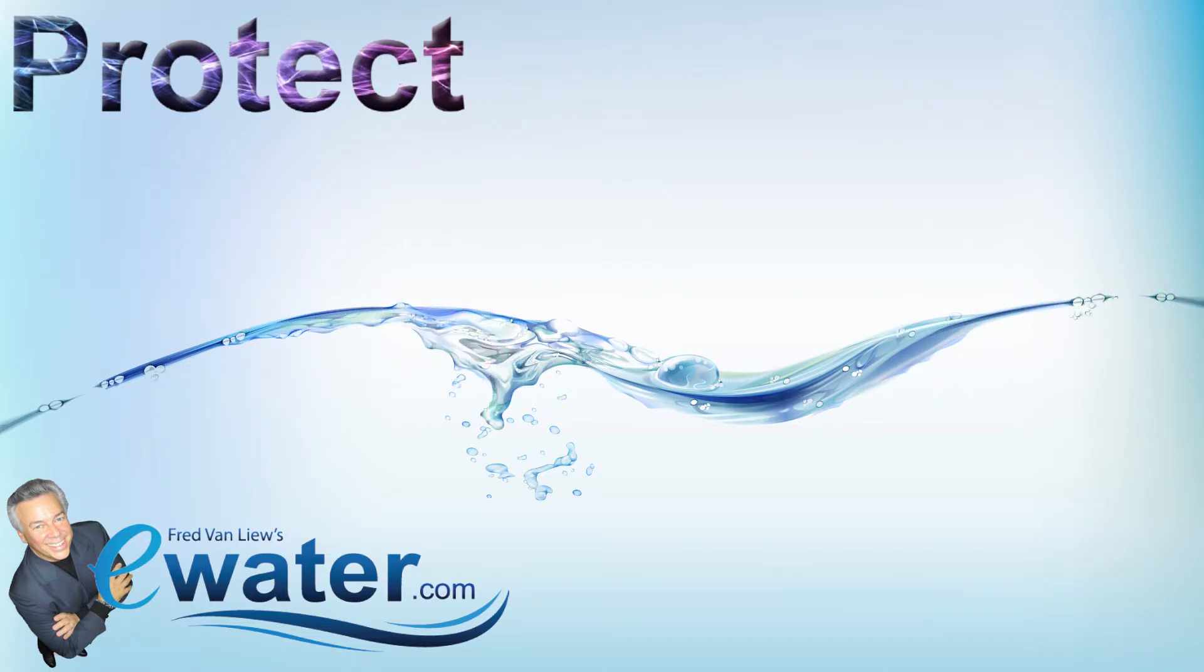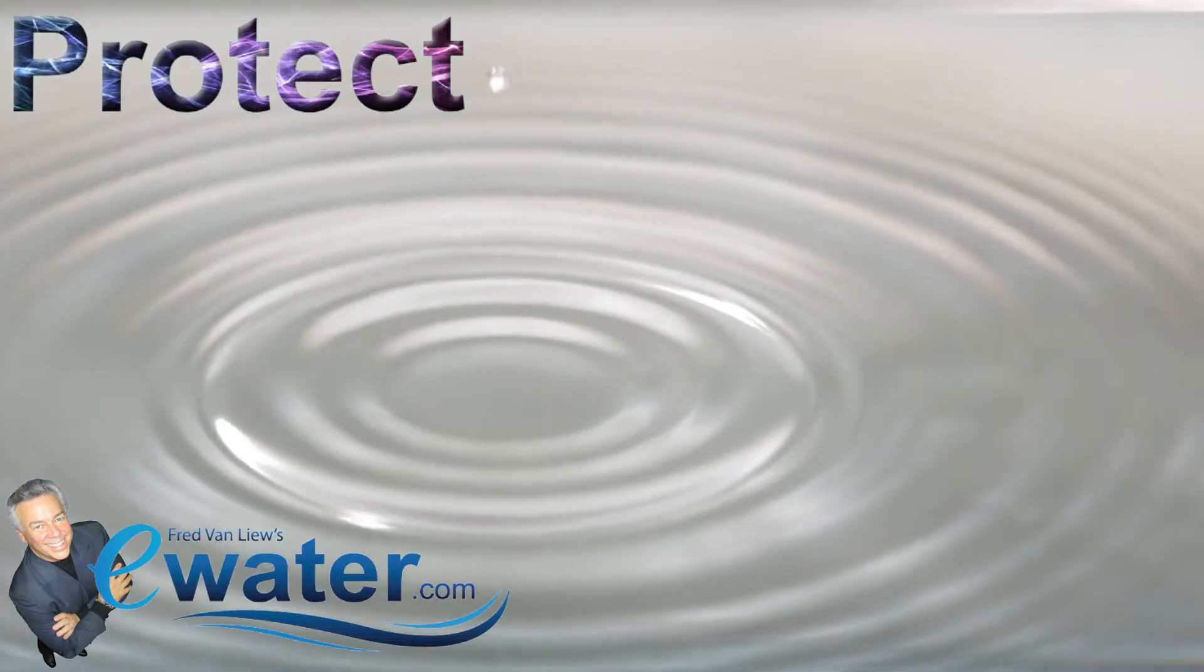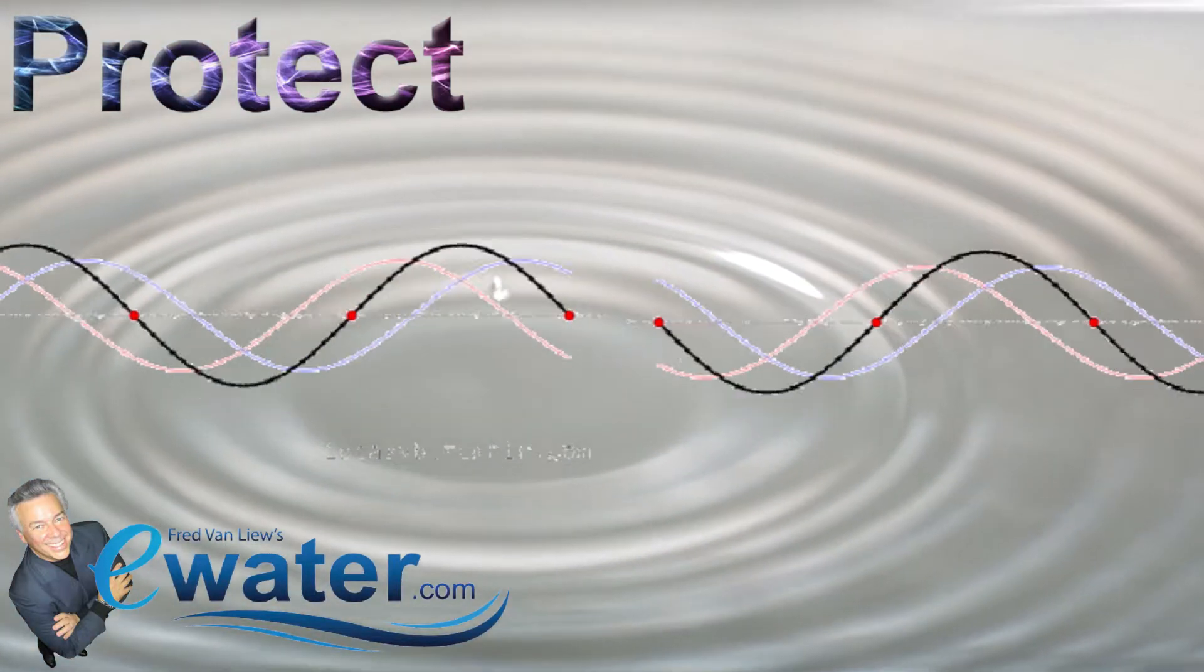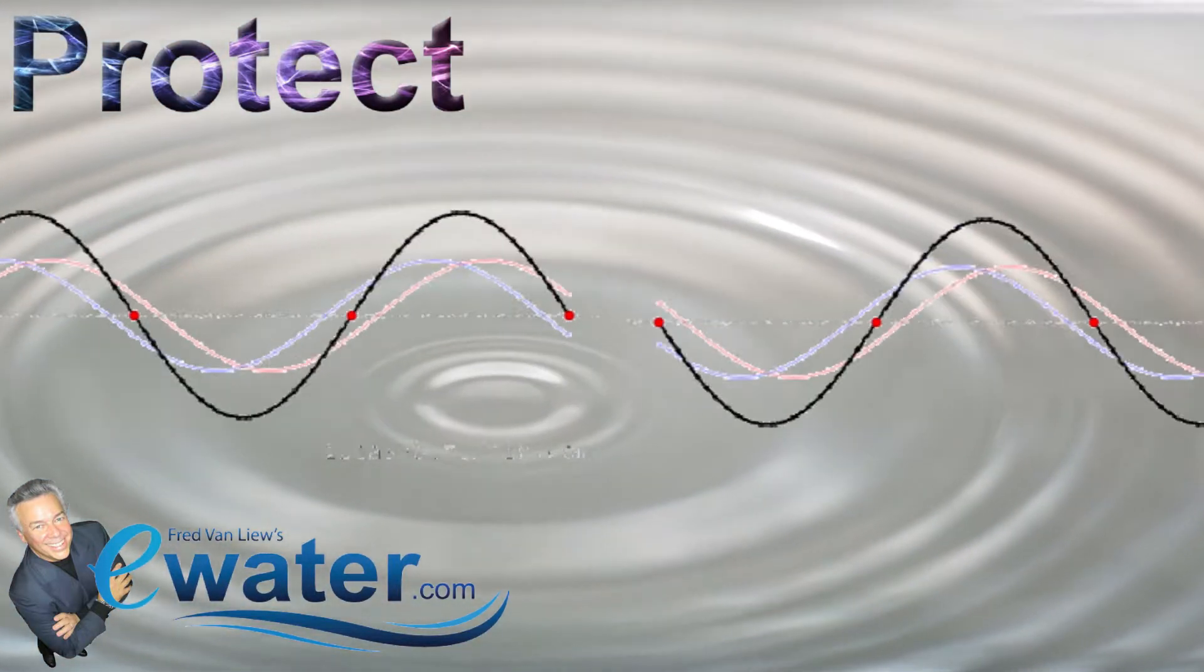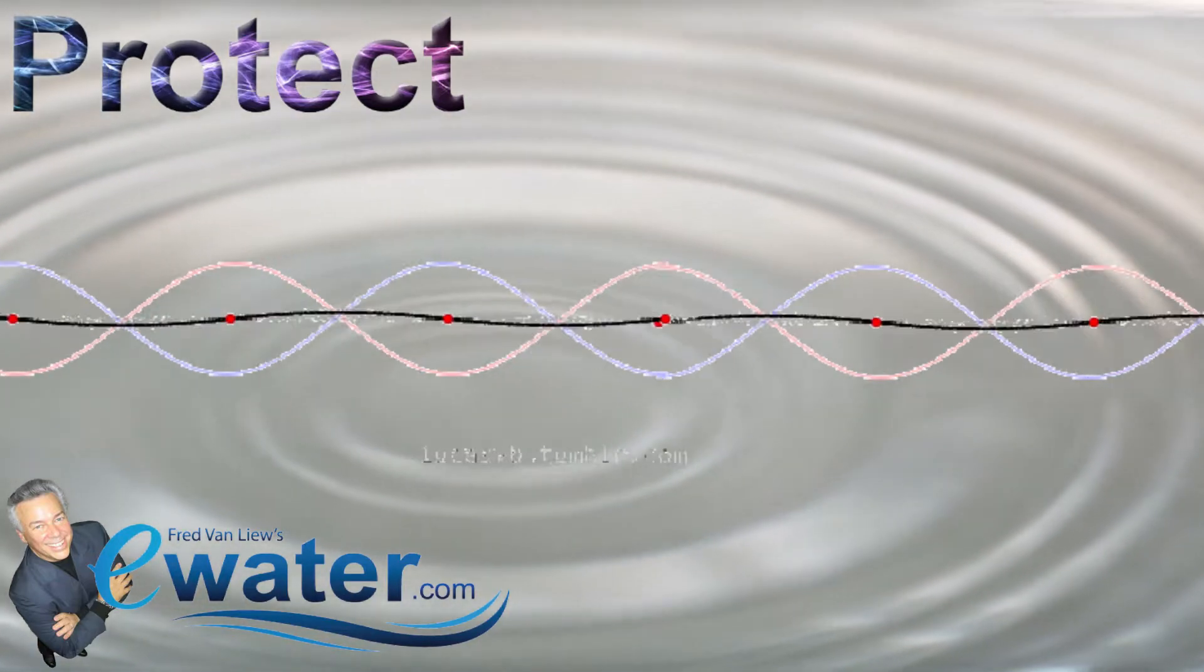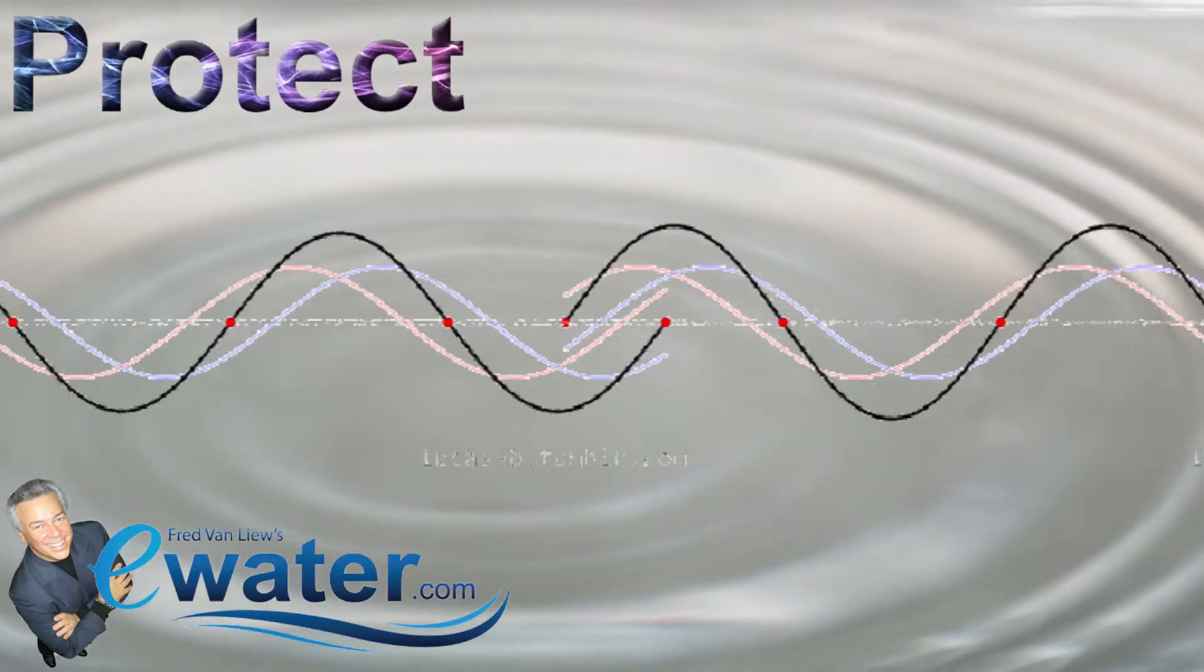When you drop two objects into water, you can see the waves emanating from them. These waves have two options: either harmonize and conform to the wave pattern of the other, or cancel out each other.